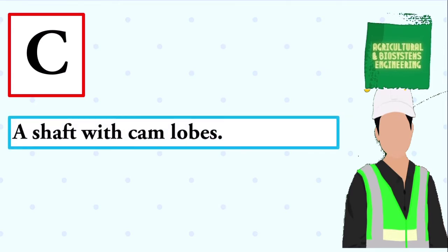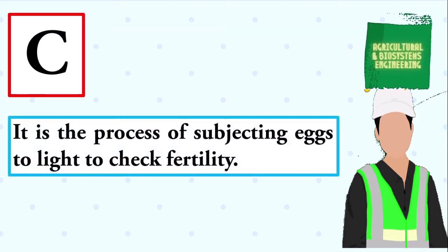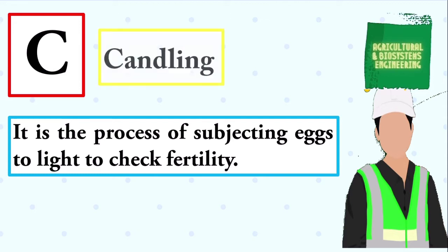A shaft with cam lobes. The answer is camshaft. It is the process of subjecting eggs to light to check fertility. The answer is candling.